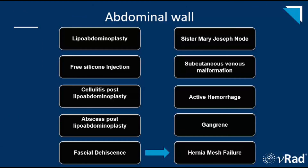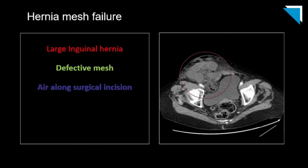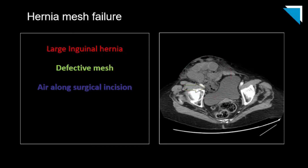Our last case is a hernia mesh failure. This patient underwent right inguinal hernia repair with mesh two days ago. We see a large right inguinal hernia containing fluid-filled small bowel loops, compatible with recurrent inguinal hernia, incarceration, and a closed loop small bowel obstruction with mesenteric congestion of the herniated bowel loop. The ill-defined air-containing structure at the neck of the hernia represents the crumpled hernia mesh with scattered foci of intraoperatively induced air; however, no abscess was found intraoperatively.